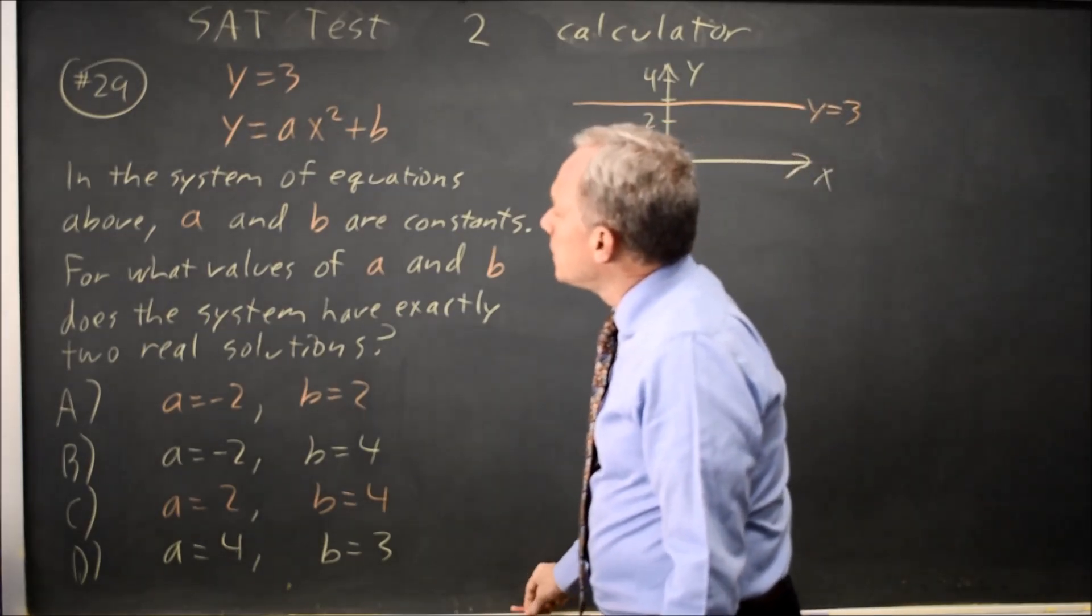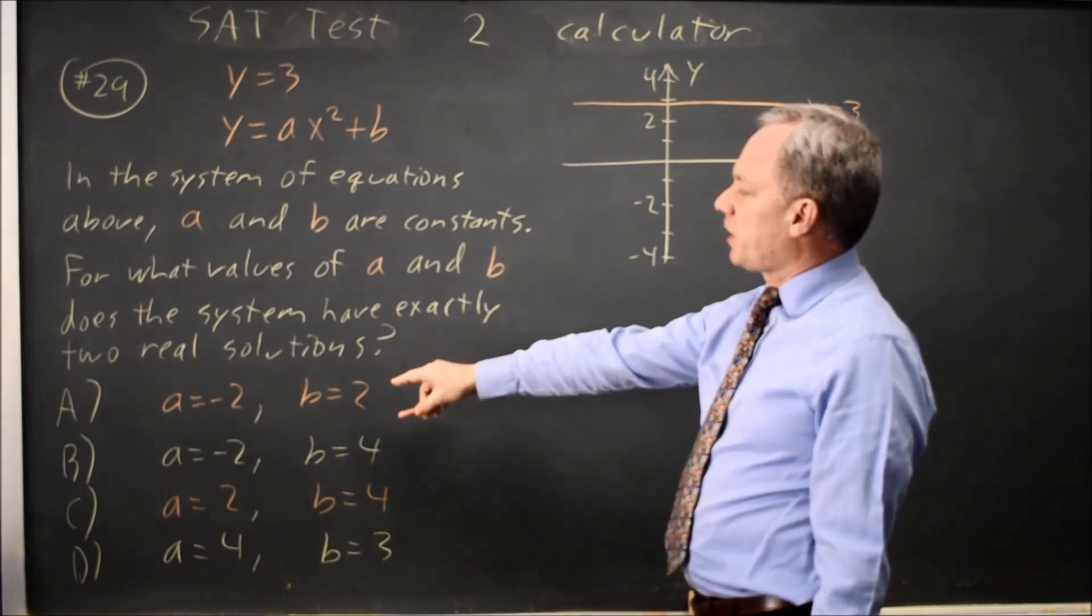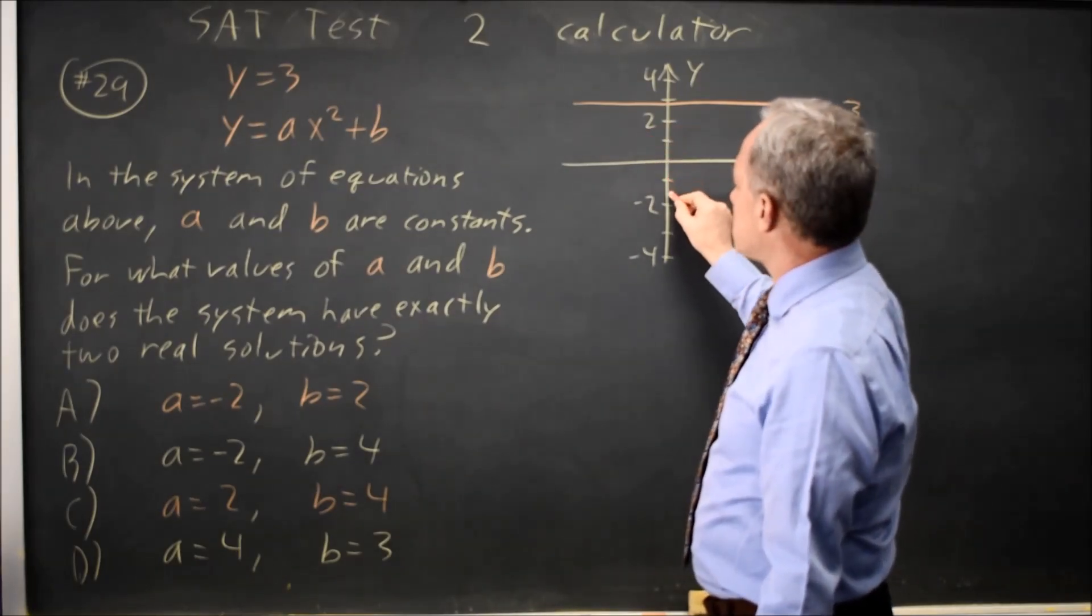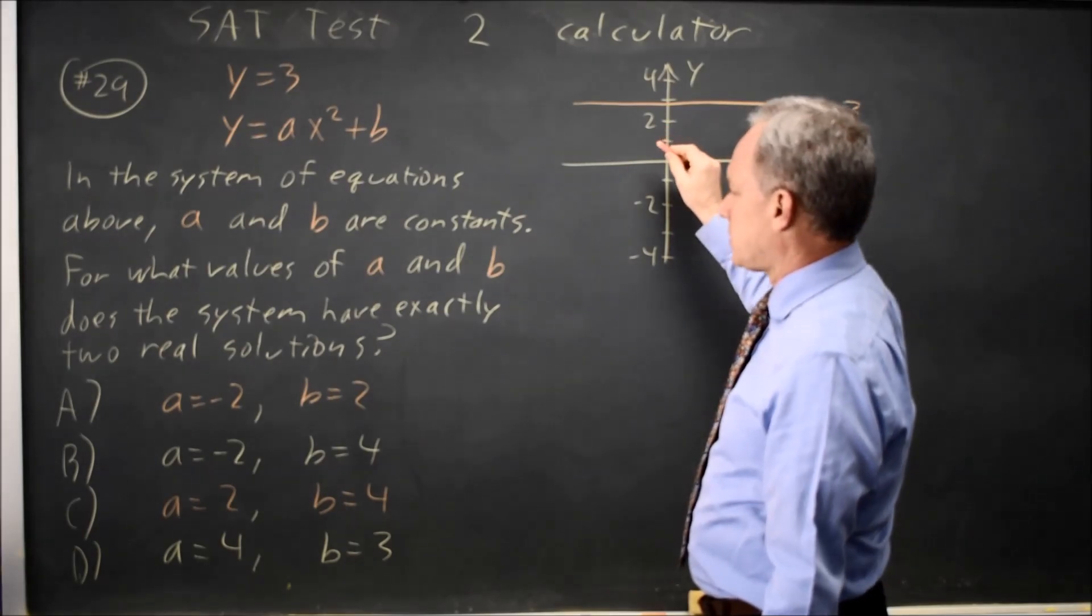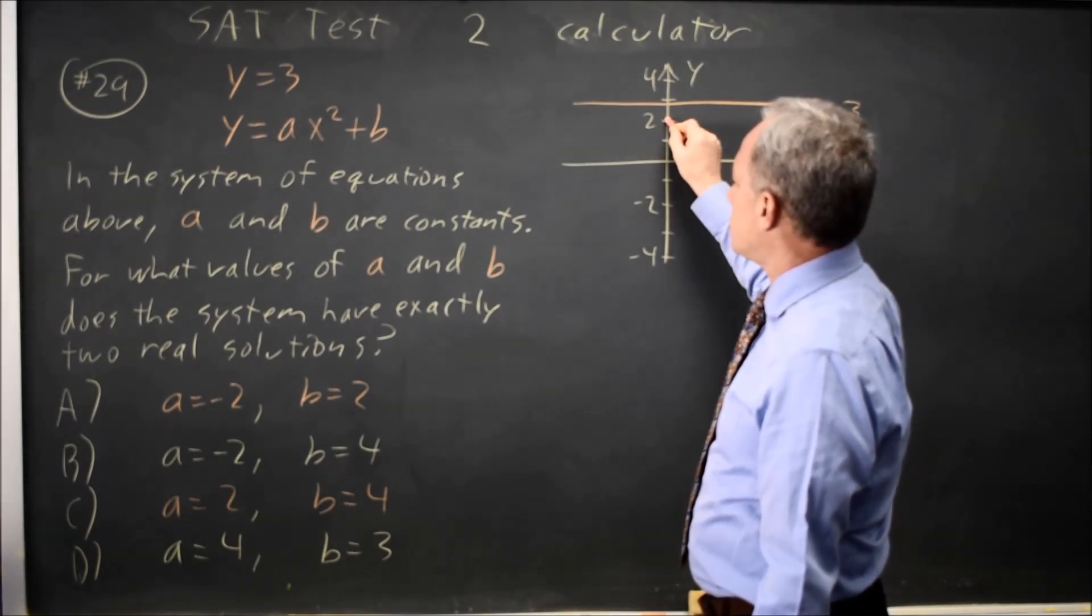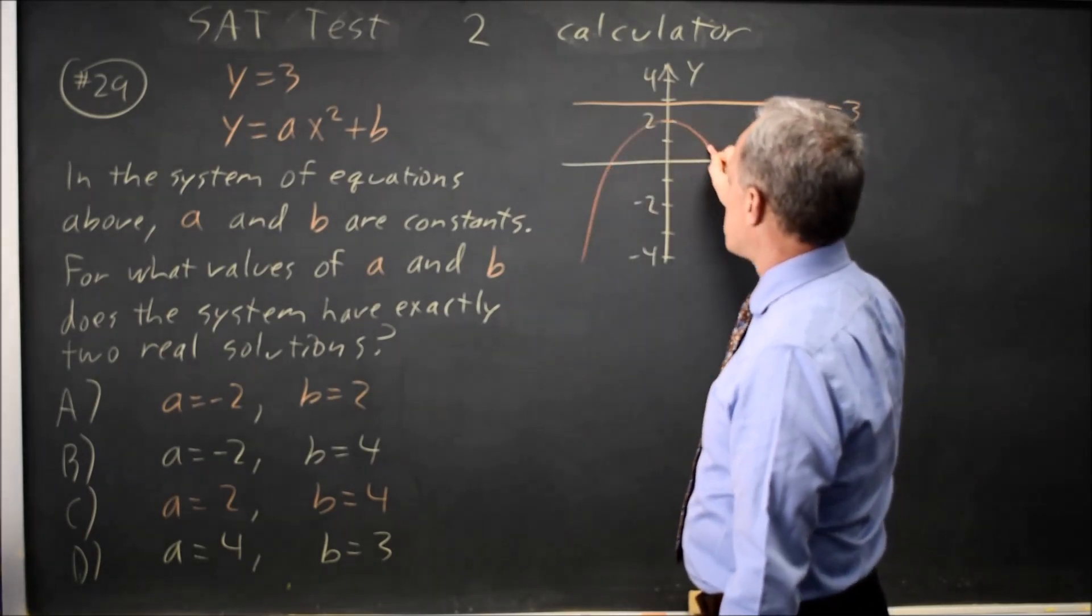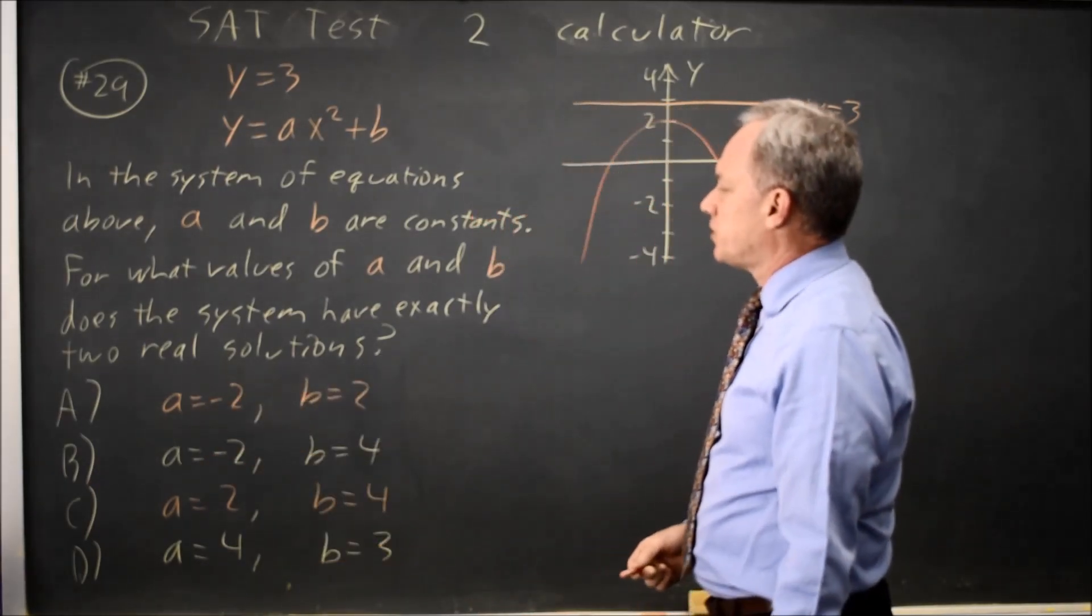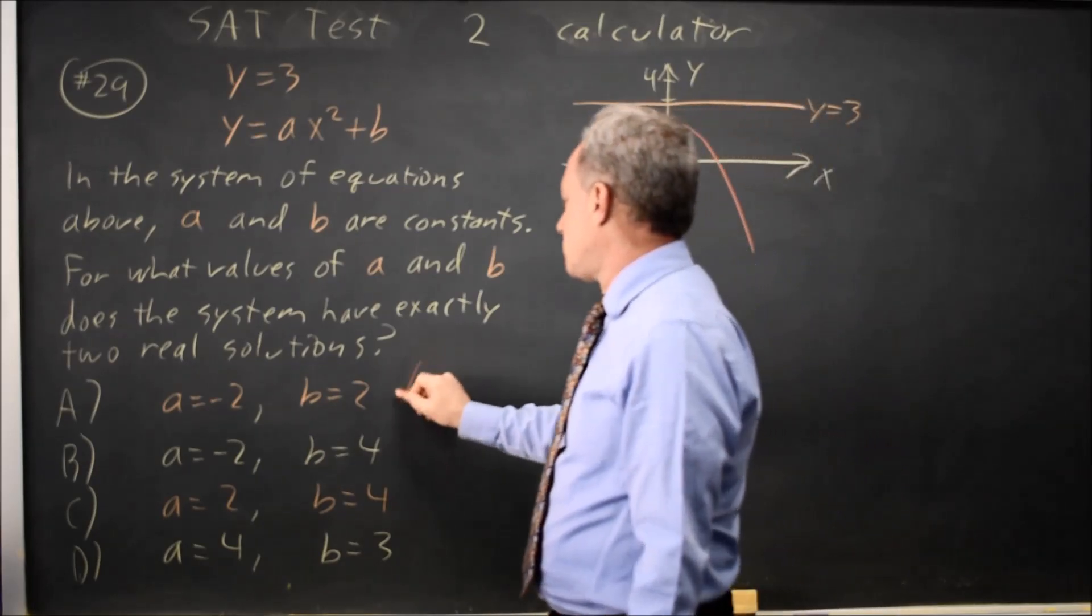And Y equals AX squared plus B for A equals negative 2, B equals 2. The vertex is at negative 2, I'm sorry, the vertex is at positive 2 and the parabola opens downward because the A coefficient, the X squared coefficient is negative. So this has no solutions.